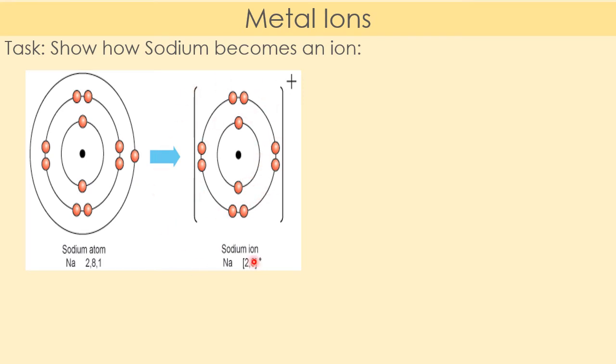The sodium ion now has a positive charge. Importantly, we need to know that the electron still exists somewhere — it is moving around, it hasn't disappeared, it is just no longer attached to the atom, which is what causes it to become an ion. So our sodium is now an ion and we have a free electron.